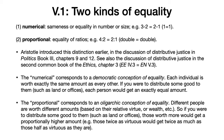The numerical concept of equality corresponds to a democratic conception: each individual is worth exactly the same amount as every other, and so if you're distributing some good — such as land, offices, or political power — each person gets an exactly equal amount. The proportional concept of equality corresponds to an oligarchic conception: different people are worth different amounts based on their relative virtue or wealth. So those twice as virtuous or twice as wealthy would get twice as much political power, offices, or land as those who are half as virtuous or wealthy.